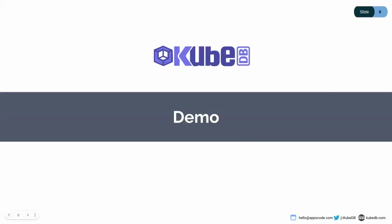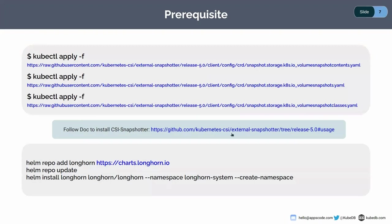Now let's go for the demo. In our demo, we are going to have a demo PG for our Postgres archiving, and we are going to restore from this Postgres archiving to another restore PG. For this demo, we need a CSI snapshotter controller. We need to deploy three CRDs first: VolumeSnapshotContent, VolumeSnapshot, and VolumeSnapshotClass. After that, from the documentation, we can deploy our CSI snapshotter controller.